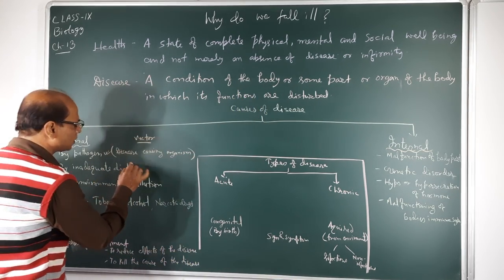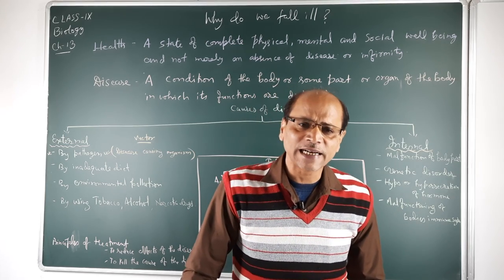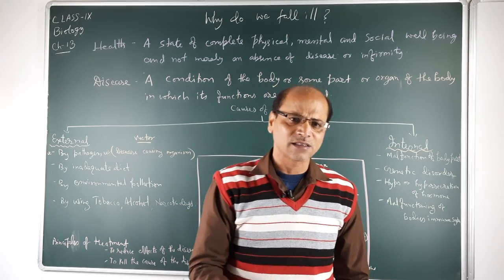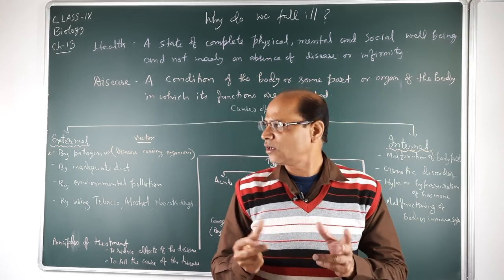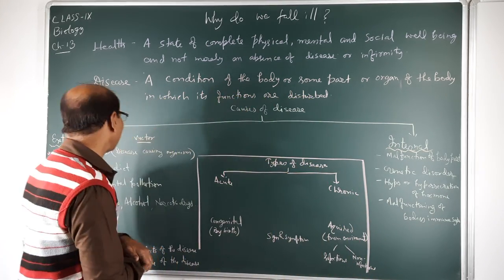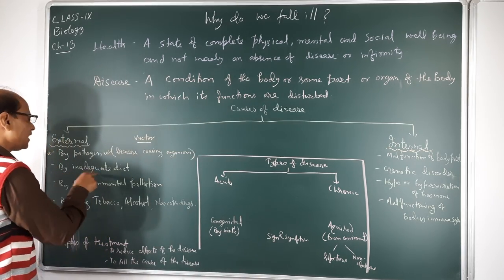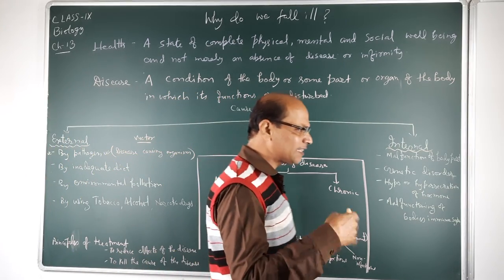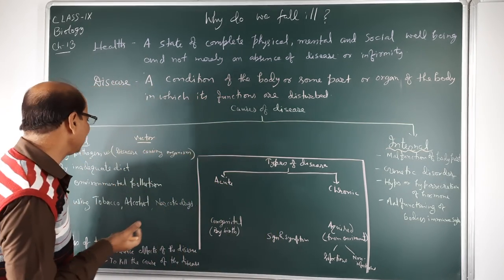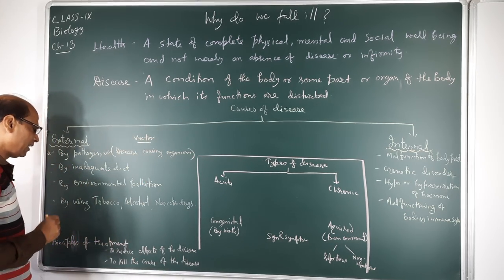The second external cause is inadequate diet — your food is insufficient or not balanced according to your body's requirement. Due to inadequate diet we can suffer from deficiency diseases — for example, deficiency of vitamins A, B, and C. Sometimes deficiency of carbohydrates and proteins causes diseases like marasmus and kwashiorkor.